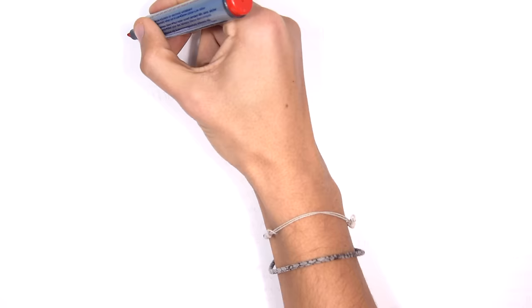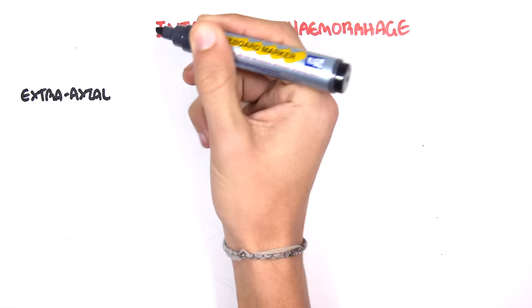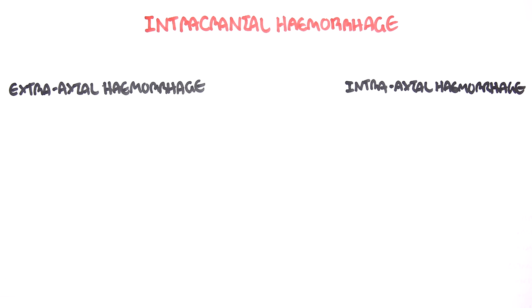Hello, in this video we're going to talk about intracranial hemorrhage. Intracranial hemorrhage is a broad term because there are different types of hemorrhages that can occur within the skull. You can divide these types broadly into extra-axial hemorrhage, meaning outside the brain tissue, and intra-axial hemorrhage, which is within the brain tissue itself.